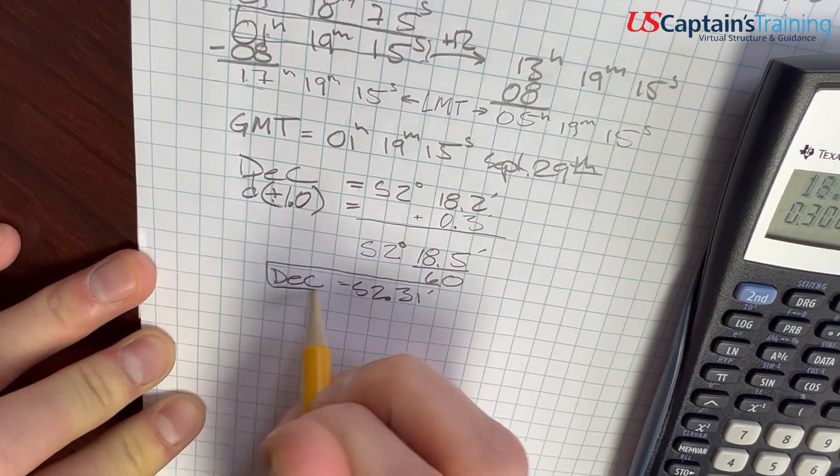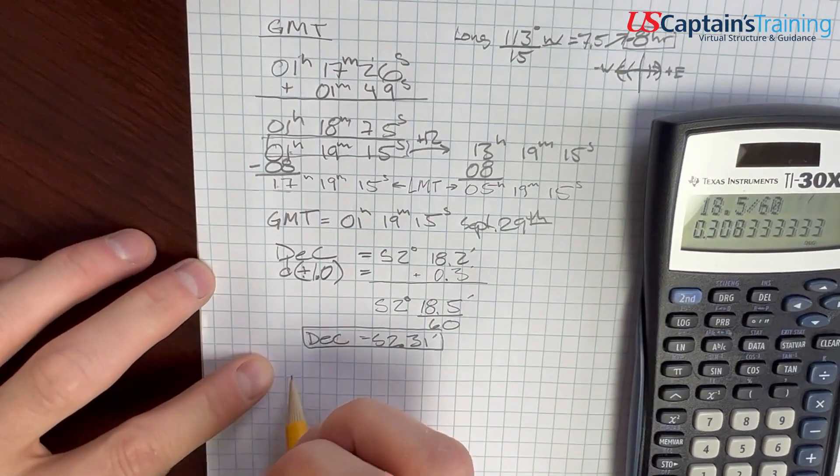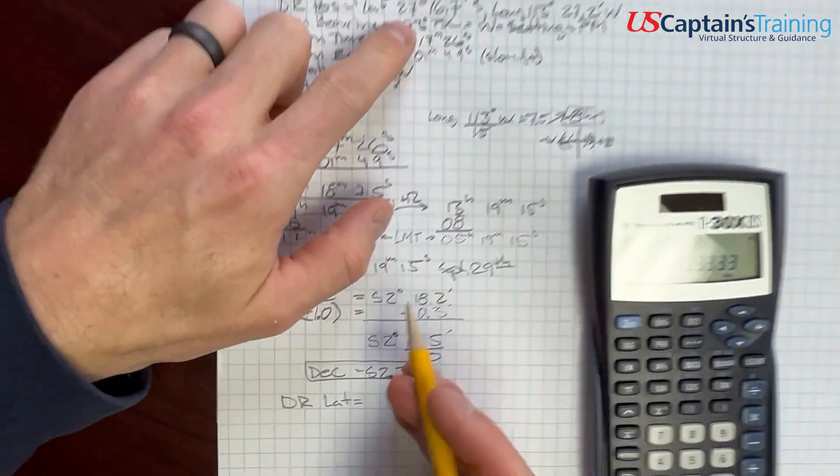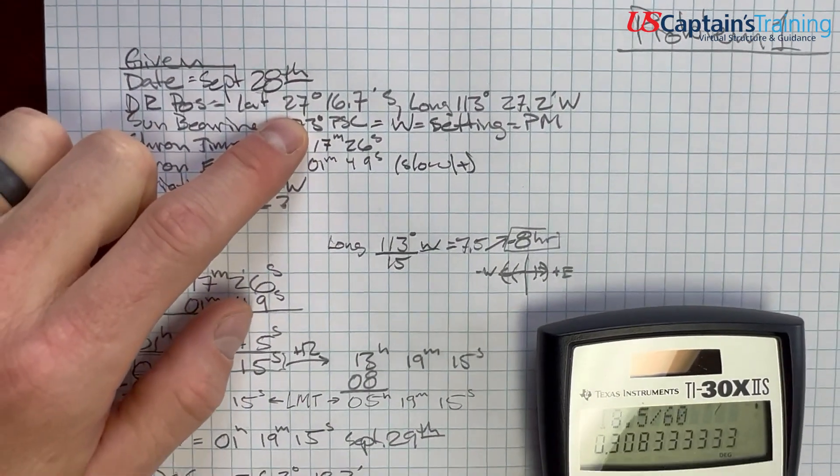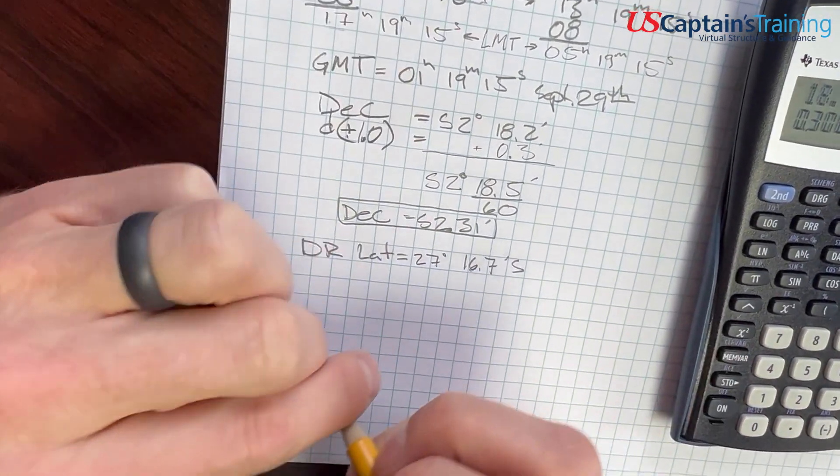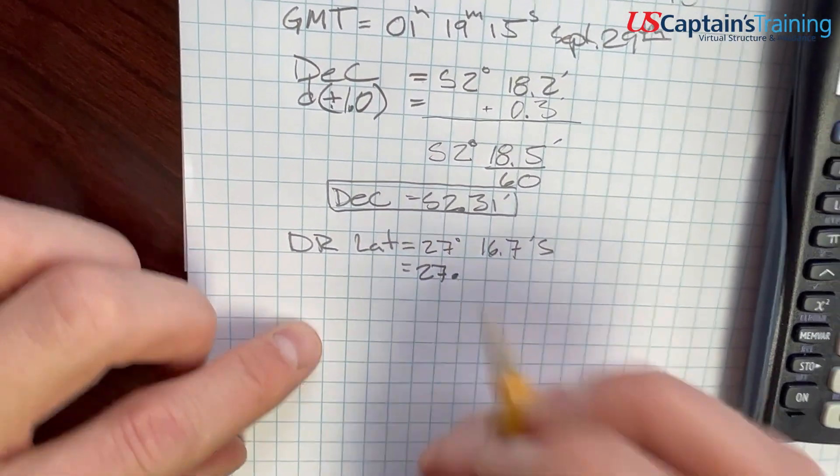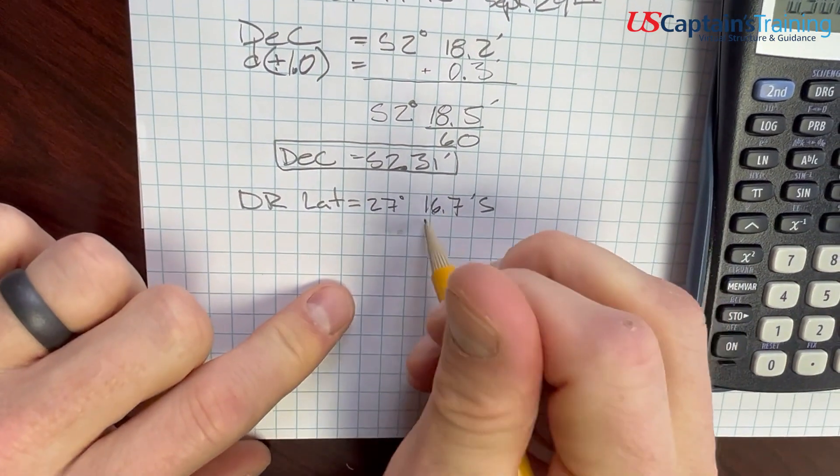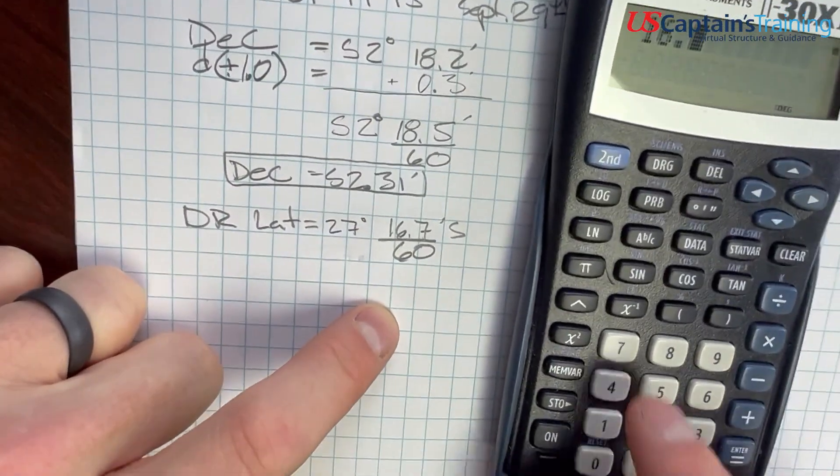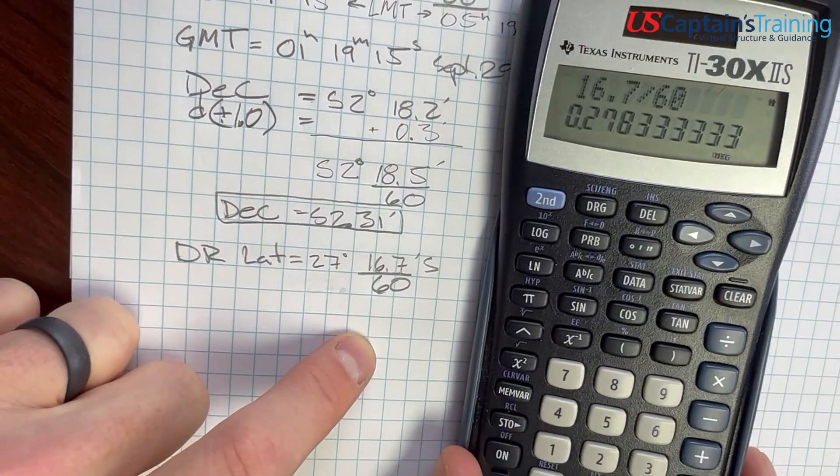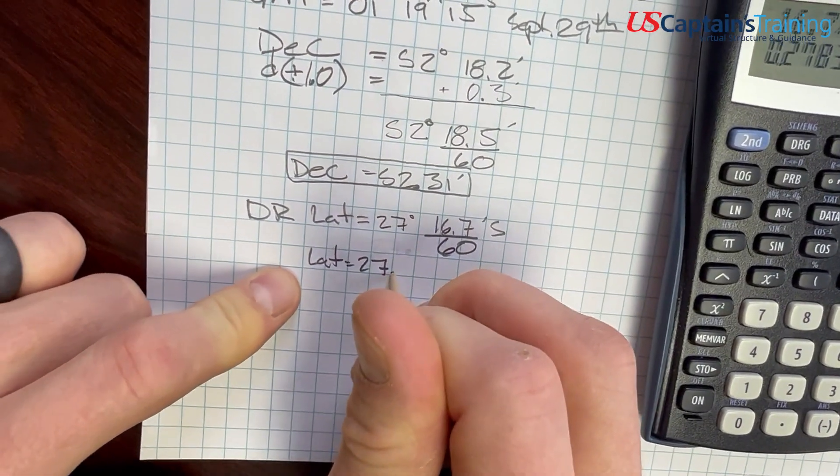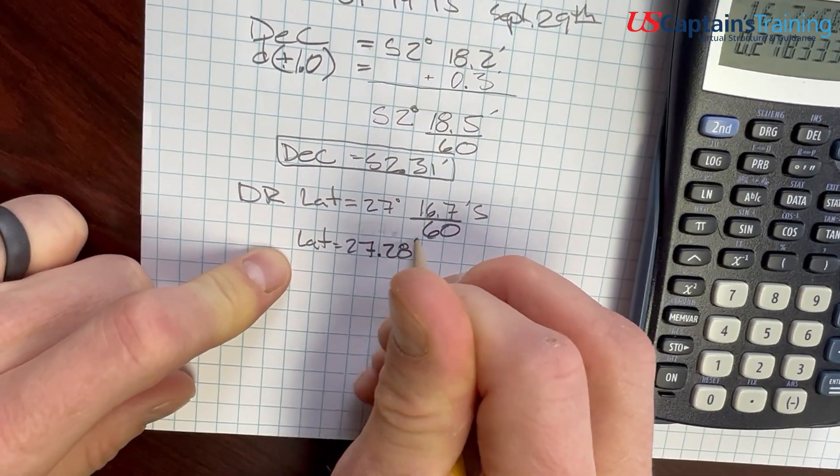Now we'll do the same for our latitude. DR latitude equals 27°16.7' south. We're going to convert these to degrees. 16.7 divided by 60 equals 0.28, so our DR latitude equals 27.28° south.